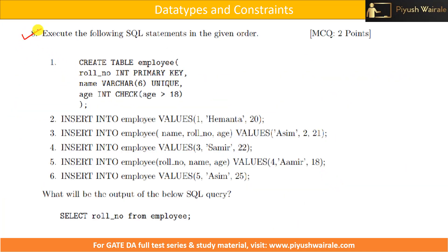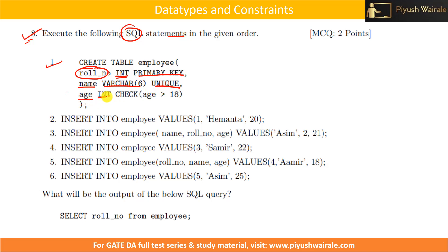Based on what we discussed in the previous lecture, let's solve a practice question. We have created a table called employee with three columns: role_number with data type int and constraint primary key; name with data type varchar(6) and constraint unique; and age with data type int and constraint check. We also discussed the syntax for creating a table and how to insert records.